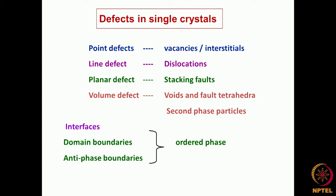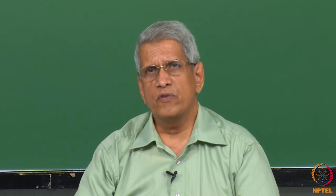In addition to that, we have planar defects, which include stacking faults. There are other types of defects — various interfaces present between different phases — which also control the property of the material, and quite often these defects are planar defects. Then another most important defect is the volume defect. Volume defects essentially could be voids in the material, or stacking fault tetrahedra, or second phase particles which have formed within the material and are distributed in different ways at different locations. How they are present at different locations decides the property of the material, and this can also be considered as a defect in an otherwise perfect matrix.